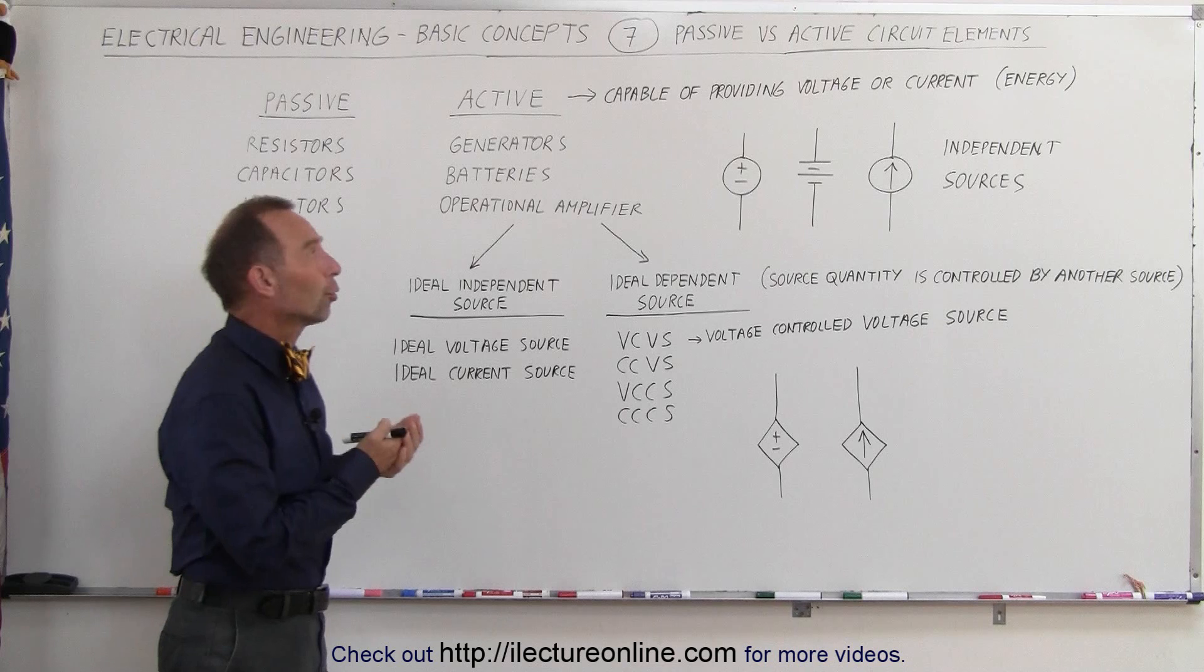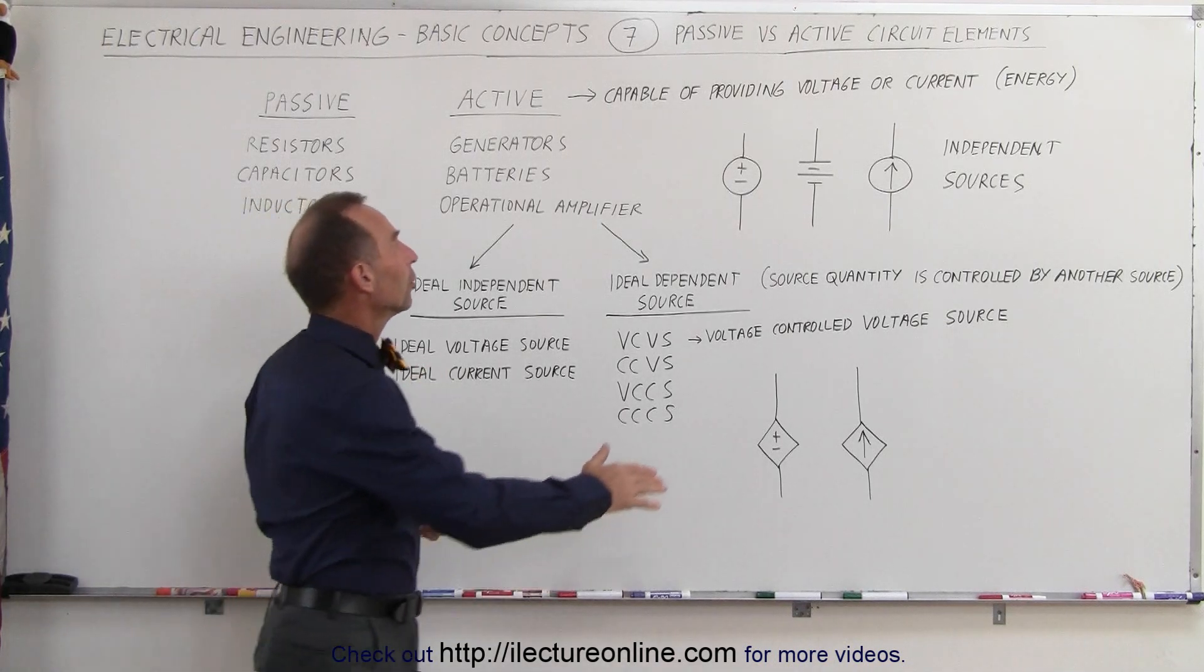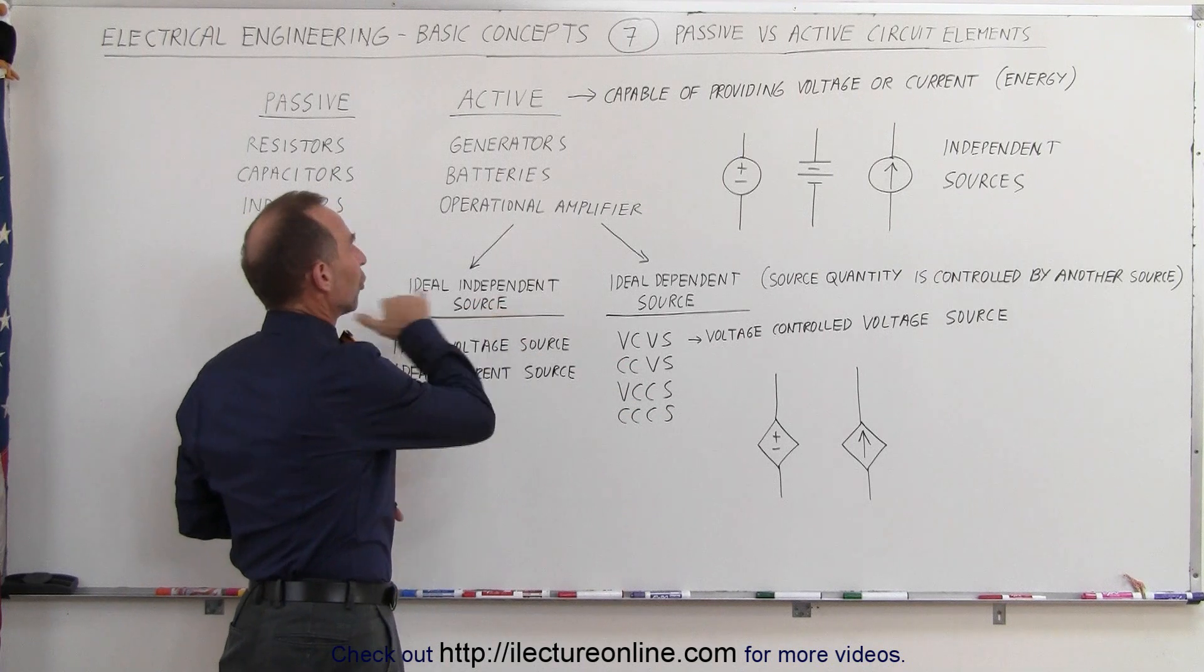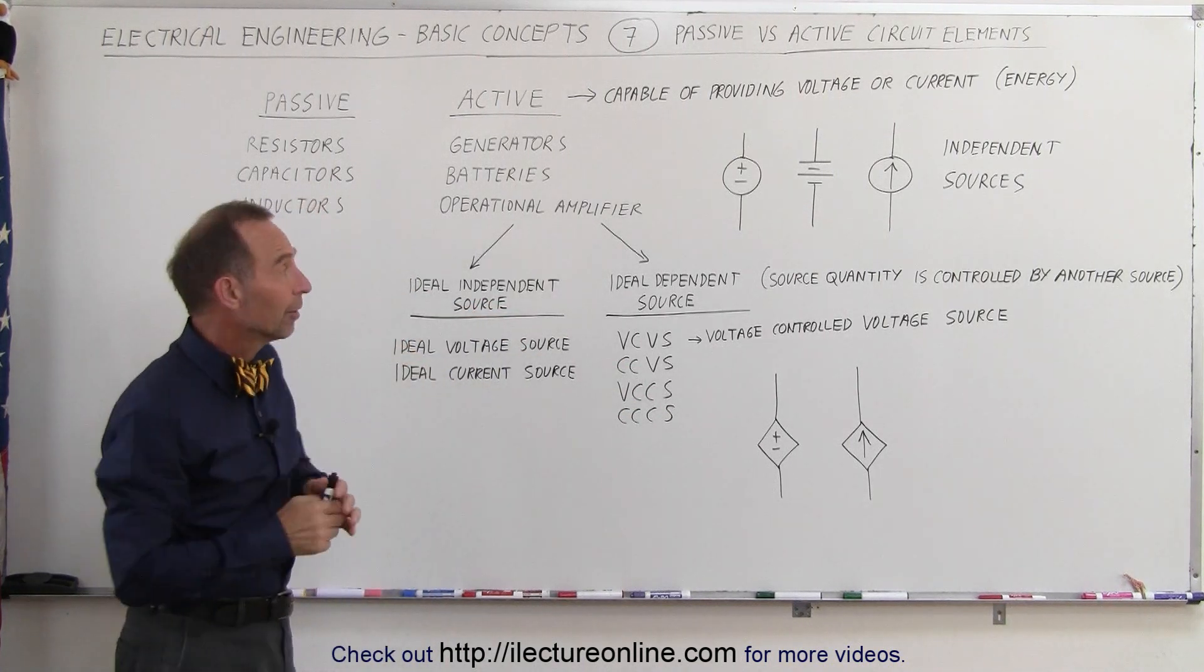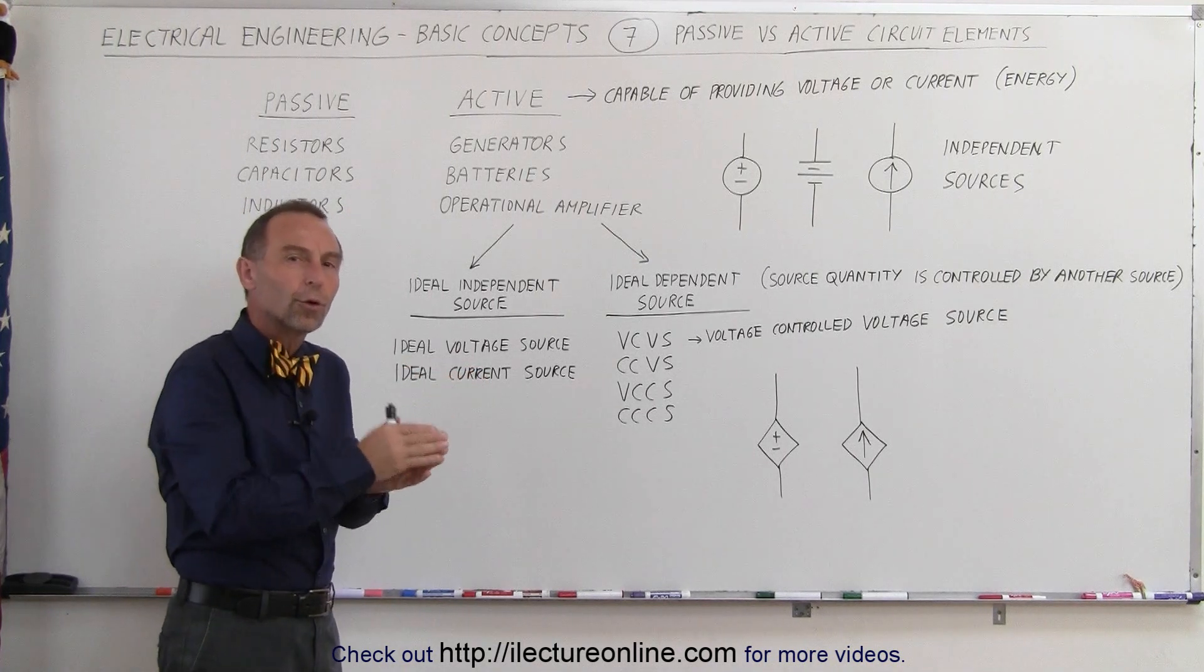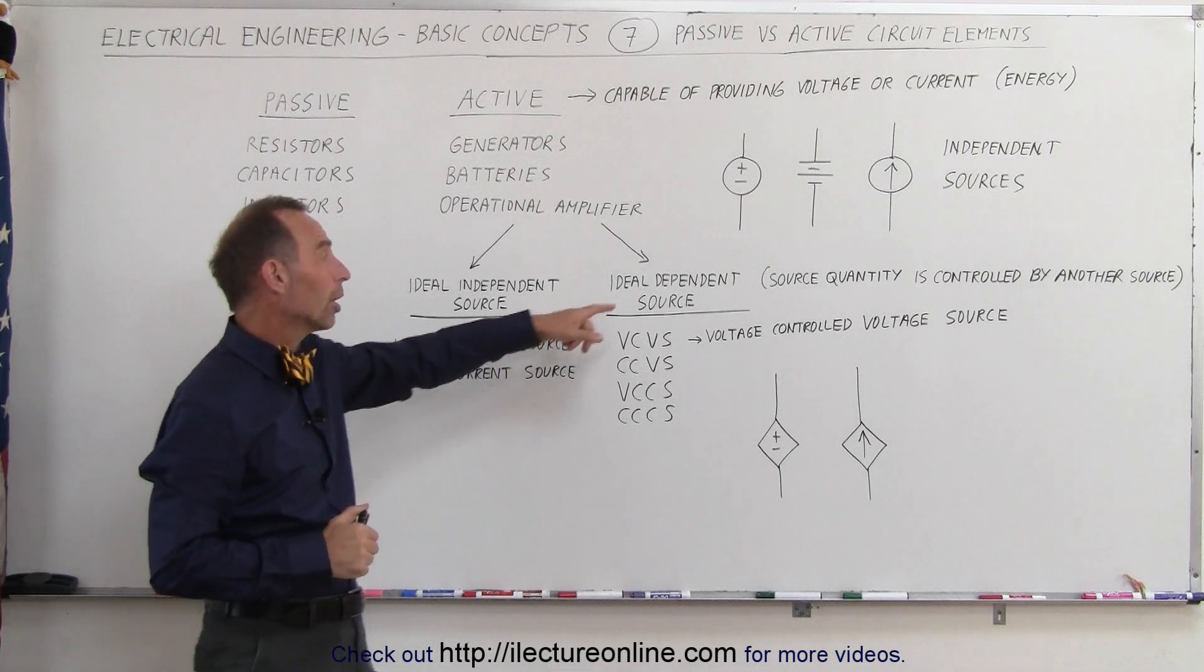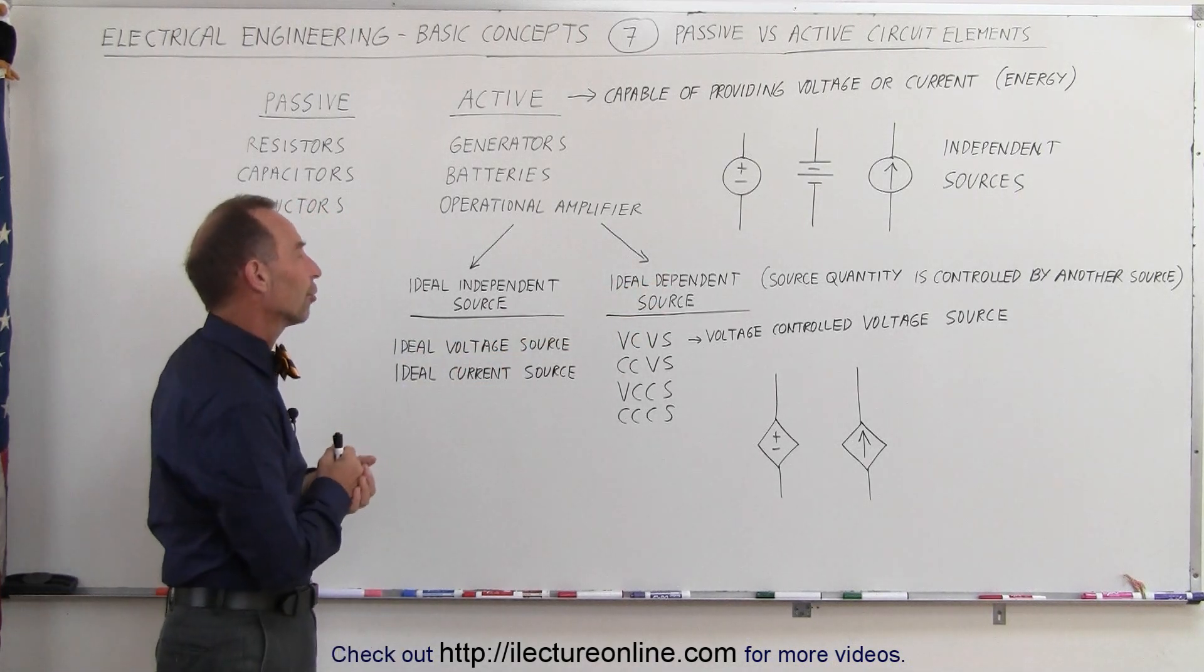When we have a voltage source or a current source that is independent of anything else, we call them independent sources. If we have sources that are dependent upon other sources to put in a certain amount of current or to apply a certain amount of voltage, we call them dependent sources. All of them of course are active sources.